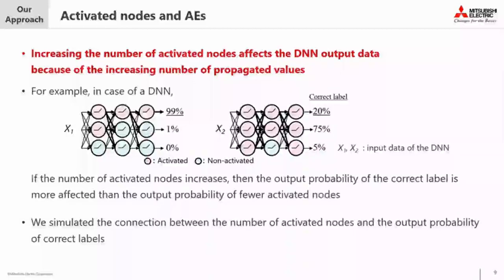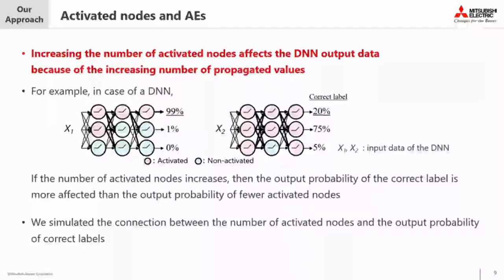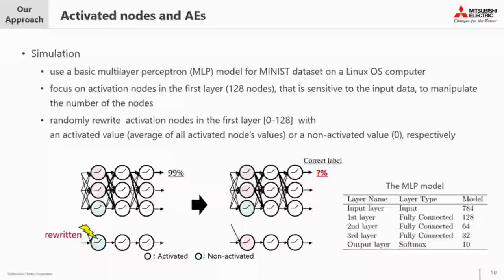I will explain that increasing the number of activated nodes affects the output data of a DNN because of the increasing number of propagated values. For example, in a DNN, when the input data is X1 versus X2, if the number of activated nodes increases, the output probability of the correct label is more affected than with fewer activated nodes. We simulated the connection between the number of activated nodes and the output probability of correct labels. The simulation used a basic MLP model for the MNIST dataset on a Linux OS computer.